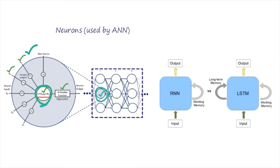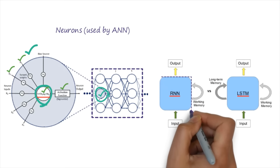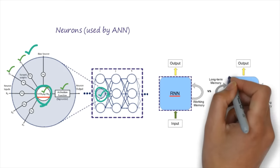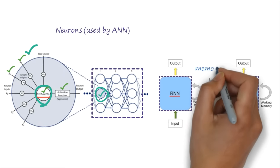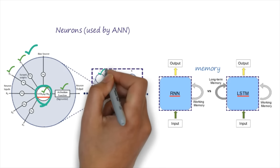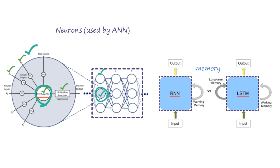But in RNN or LSTM, instead of drawing a neuron, I am just creating a box. Whenever I draw a box, it signifies memory, not neurons. A neuron has a very feeble or very less amount of information retention capability. But whenever I talk about a box, it signifies memory, meaning it has a good amount of information retention capability.